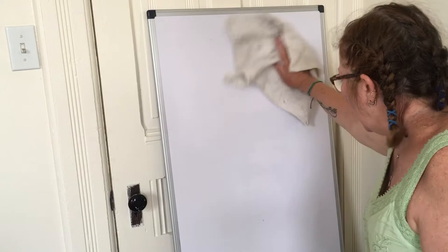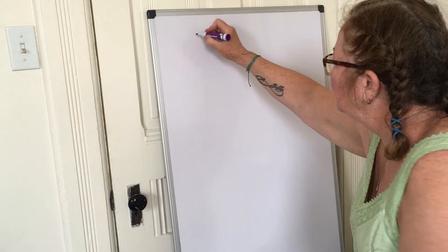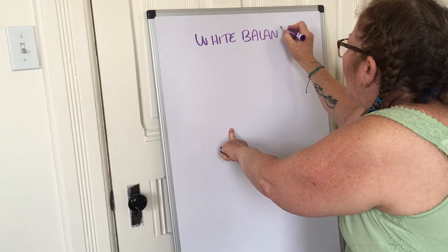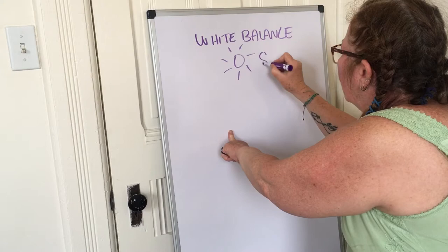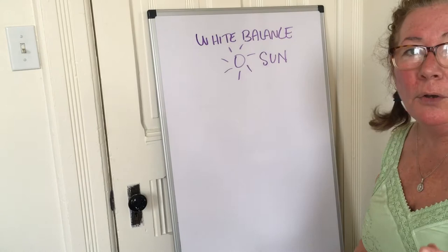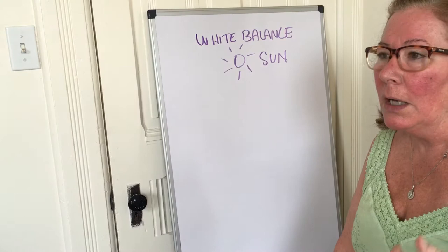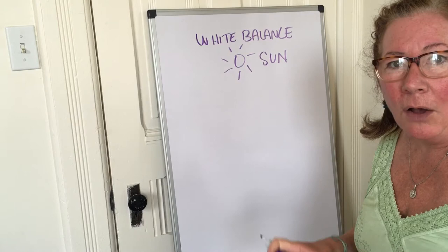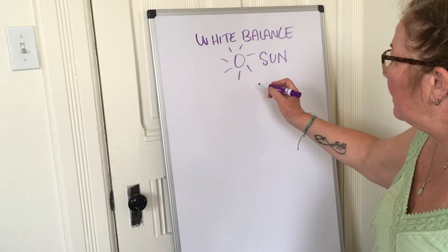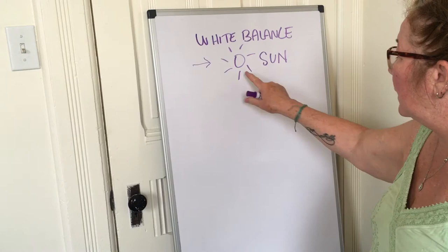Sunshine is our benchmark — it's the presence of all colors. White balance is pretty much based on the color of the Sun. When looking up white balance in your camera, you'll probably have to go to your menu, since very few cameras have dials on the outside anymore. You'll go into a menu and see something called white balance, often represented by little icons.